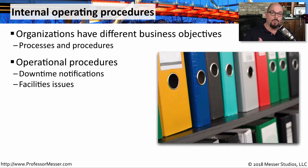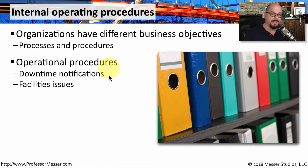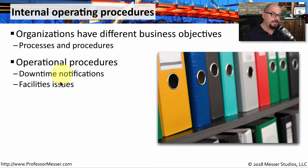For example, when a system goes down, there may be a specific notification process. This may be an electronic notification, or your processes may require that you call someone directly to let them know. If there are facilities issues, you need to know exactly how to handle that, and so there should be a set of processes and procedures for that as well.